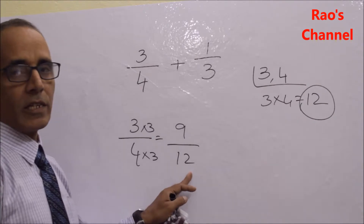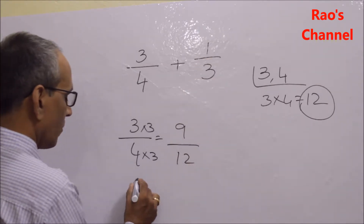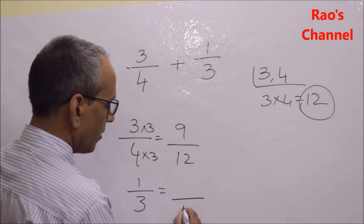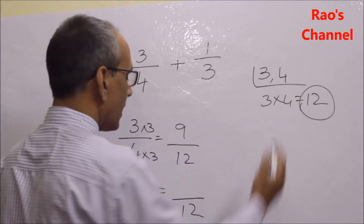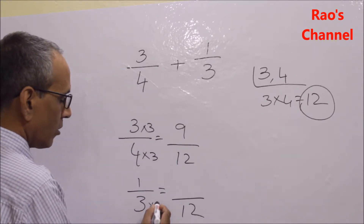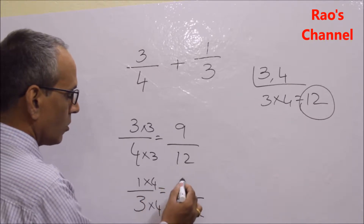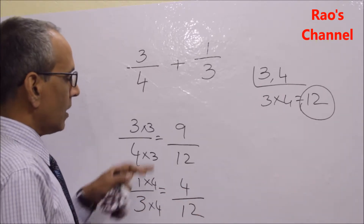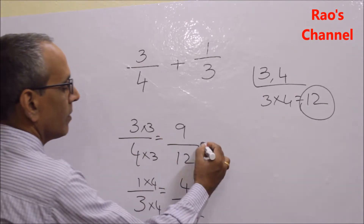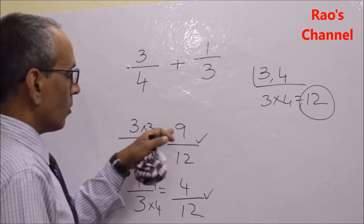For the next fraction, 1 by 3, I also want the denominator 12, which is the LCM common to both. To get 12, the denominator 3 is multiplied by 4, so I multiply the numerator also by 4, giving 4 by 12. Now I have the equivalent fractions 9 by 12 and 4 by 12.